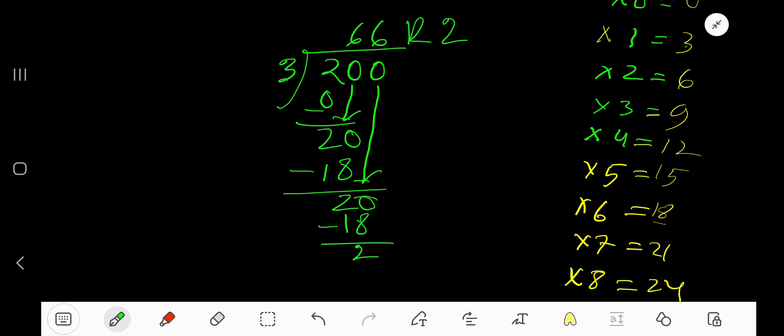But if you want to write your answer in decimal form, you need to convert this whole number into a decimal number. Take the decimal point, then you can add any number of zeros.